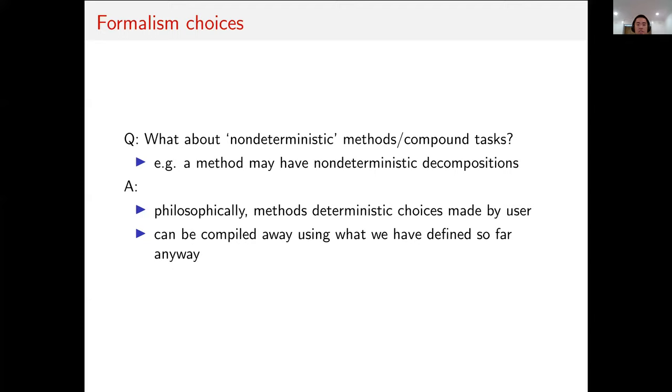Another question is, what about making non-deterministic decomposition methods? For example, a method which may decompose into several different task networks non-deterministically. There are two answers for this. The first is a philosophical one, which aligns with the point of planning. Methods are choices made by users, which are usually more deterministic. A more compelling reason is that we can compile away this feature anyway with what we've defined so far, quite easily without any overhead.